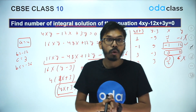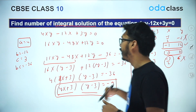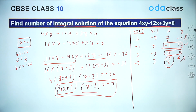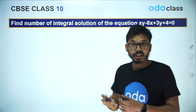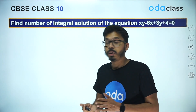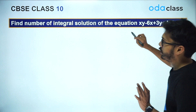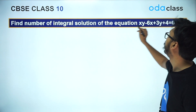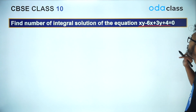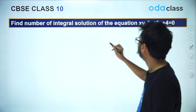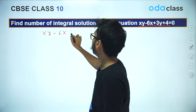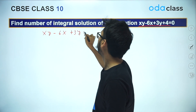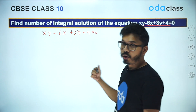Now I'm going to show you one more example which is a little bit more complex. The other question is a proper Diophantine equation of the AXY + BX + CY = D type. Find the number of integral solutions of the equation XY minus 6X plus 3Y plus 4 equal to 0.